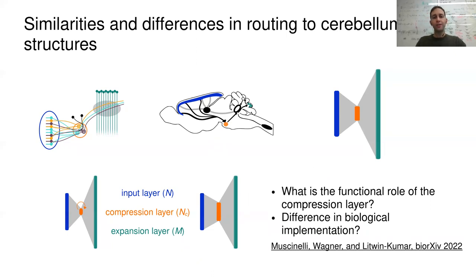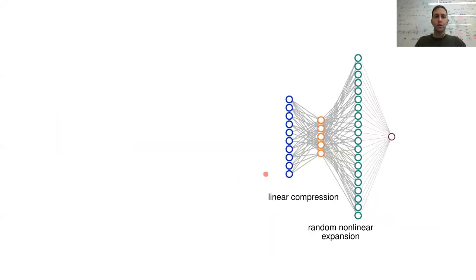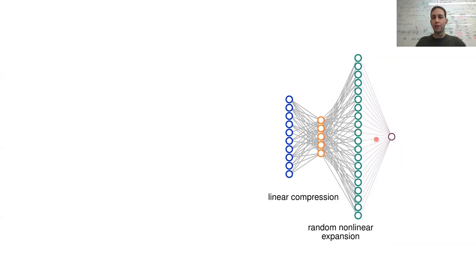We try to answer these questions using a modeling approach. We model this bottleneck motif using a three-layer feedforward neural network. The compression is a simple linear compression, followed by an expansion which is random, sparse, and nonlinear. After the expansion layer — the granule cell layer — we assume a single readout neuron representing a Purkinje cell.